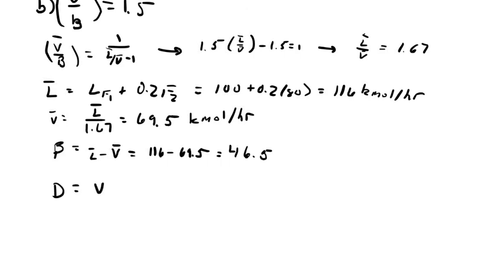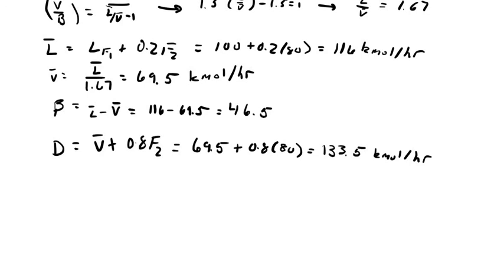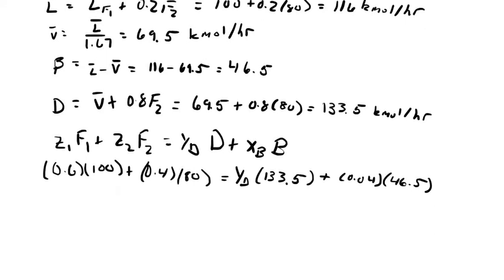Your distillate flow rate can just be found by V bar plus 80 percent of feed 2. And finally you can find your composition with the mass balance around the entire system. In solving for YD you'll find that the composition of acetone equals 0.68.